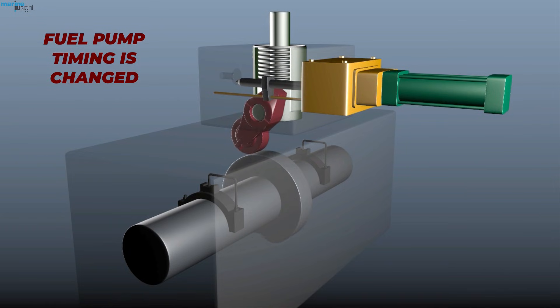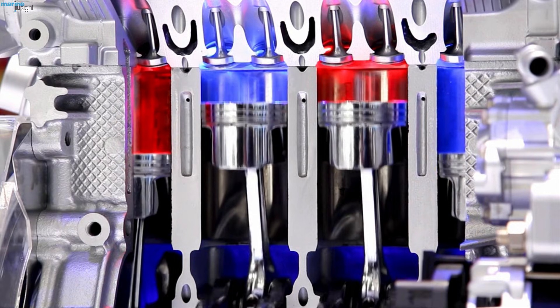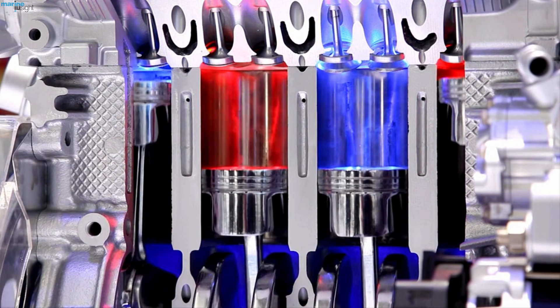When the fuel pump timing is altered for reversing the engine—that is, the firing order is altered—it is important to supply air into the cylinder as per the new reverse firing order, or else the reversal of the engine will not take place.